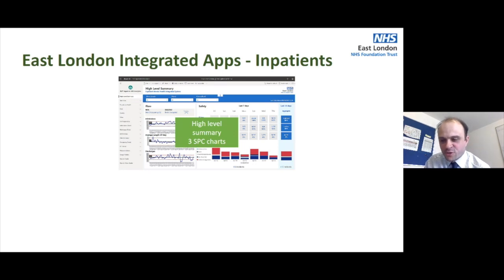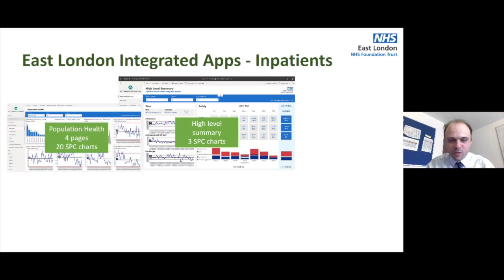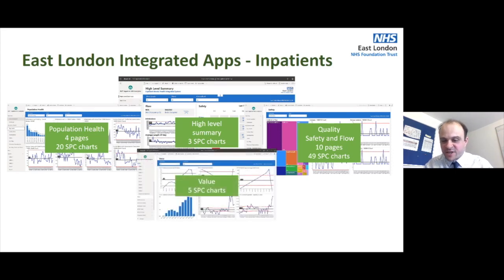This is exciting but also rather scary, and it might be for some of you who have begun the journey that East London started quite a few years ago. This is our integrated app solution, just for inpatients. We have a high-level inpatient summary with three SPC charts, population health pages — four of those with 20 SPC charts — quality safety inflow pages, ten of those with 49 SPC charts, and a value section with five further SPC charts.